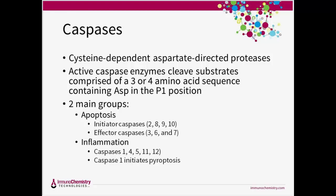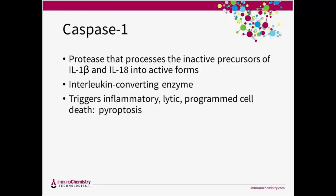Caspase-1 activity is integral to pyroptosis and is really the main focus of our webinar today. The main player in pyroptotic cell death is this caspase-1 enzyme. It was first named interleukin-1-beta converting enzyme, as it's a protease that processes the inactive precursors of interleukin-1-beta and interleukin-18 into their active forms. Caspase-1 can activate these inflammatory cytokines, but also trigger plasma membrane rupture and other morphological characteristics of pyroptosis.